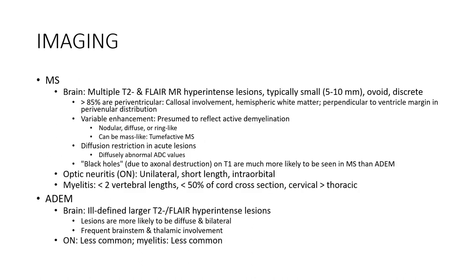Imaging of multiple sclerosis — brain: Multiple T2 and FLAIR hyperintense lesions, typically small, ovoid, discrete. More than 85% have periventricular lesions. Lesions are in white matter or periventricular to the ventricle margin in a periventricular distribution. Gadolinium enhancement is presumed to reflect active demyelinating lesions; nodular, no ring-like; can be mass-like or tumefactive.